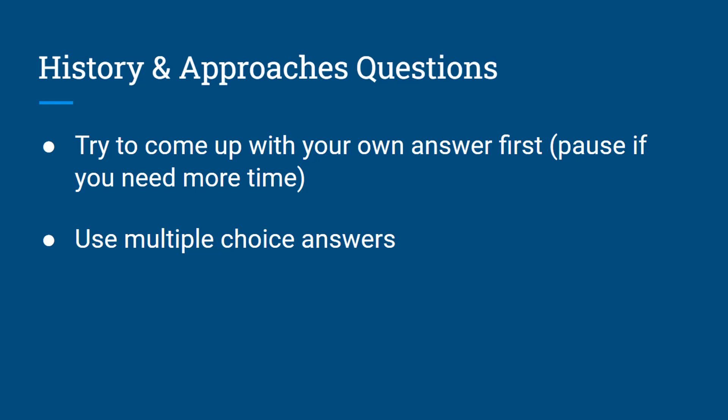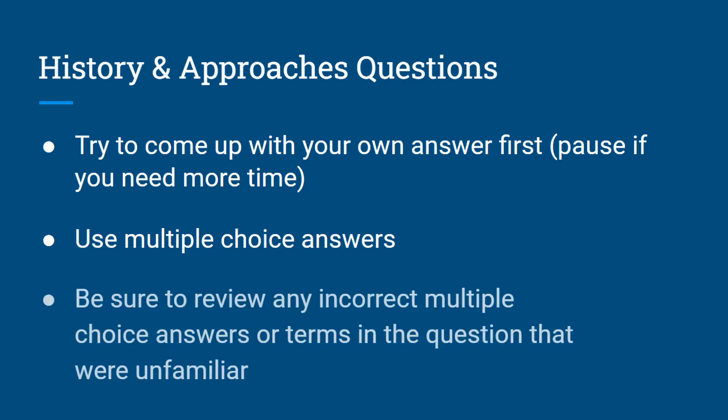This is an example of retrieval practice, where the information is hopefully in your mind somewhere and you're spending some time trying to find it, rather than just looking to the multiple choice answers right away. I also recommend that you review any incorrect answers and make sure that you understand why they're incorrect. If there were terms or names in the multiple choice that you didn't fully understand, you may want to look those up — the same is true for anything mentioned in the explanation of the correct answer. Those extra details might help you understand not just the particular version of the question, but other similar versions that could appear on an exam.